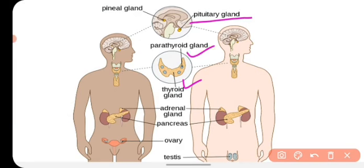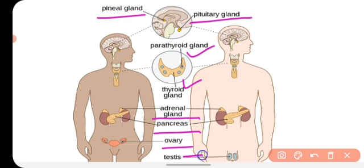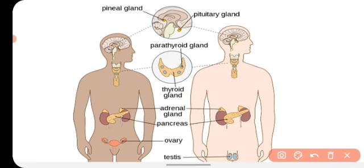So we have covered the pituitary gland, thyroid gland, and parathyroid gland in this video. In the next part, we will talk about the remaining endocrine glands: the pineal gland, adrenal gland, pancreas, ovary, and testis. Thank you and have a nice day.